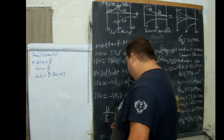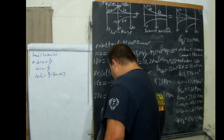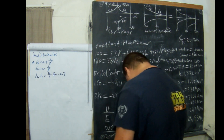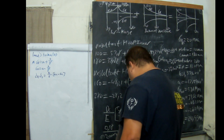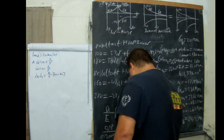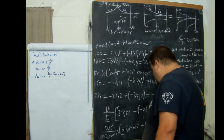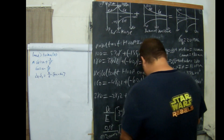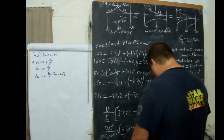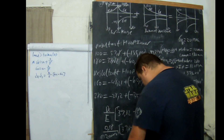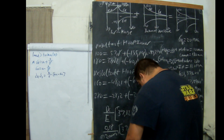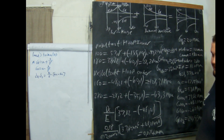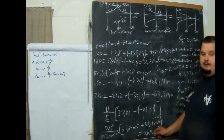So we calculate: 0.18 over (200 × 10⁹), because that's gigapascals, times (37.82 × 10⁶ plus 48.21 × 10⁶). Putting this in the calculator, we get 0.0744 millimetres.